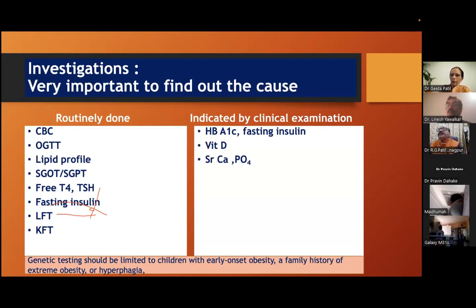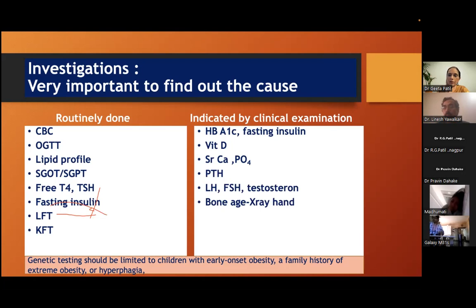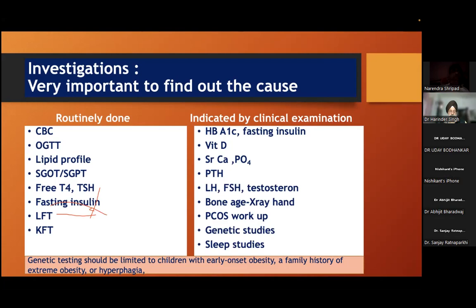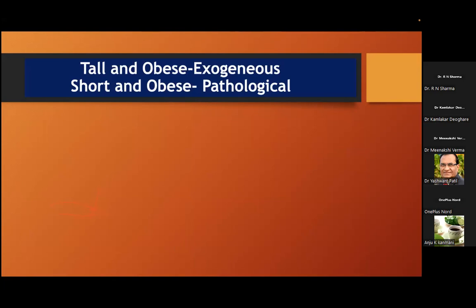Fasting insulin is very important because it tells about insulin resistance. More than 5 units fasting insulin means heading toward insulin resistance. Additional specific investigations: Vitamin D, calcium, phosphate, parathormone, LH, FSH, testosterone to diagnose PCOD, bone age X-ray of hand, PCOS workup, genetic studies, sleep studies. Genetic testing should be limited to children with early onset obesity, family history of extreme obesity, or hyperphagia.